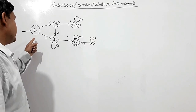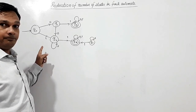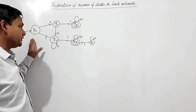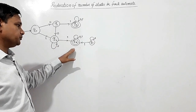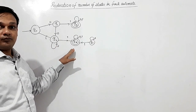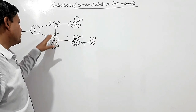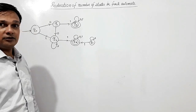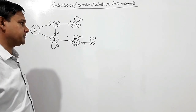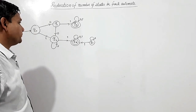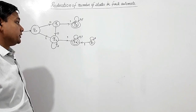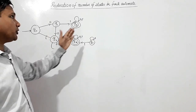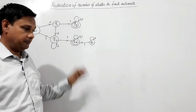This is a given DFA in which Q0 is the initial state, Q3 and Q4 are the final states, and Q1, Q2, Q5, and Q0 are the non-final states. Here we have to reduce the number of states in this DFA.